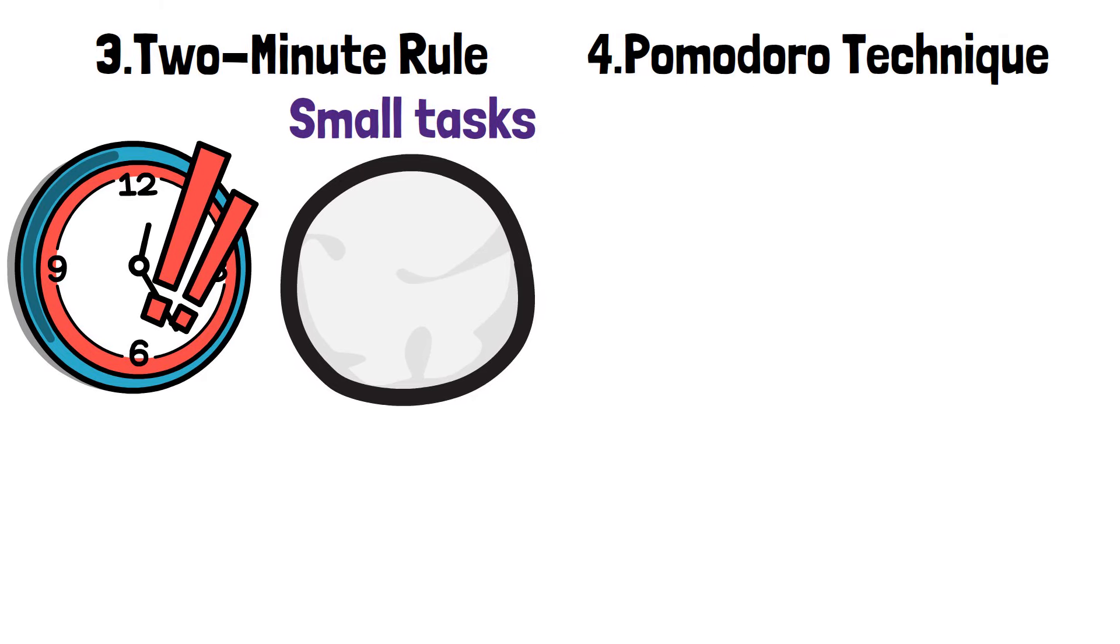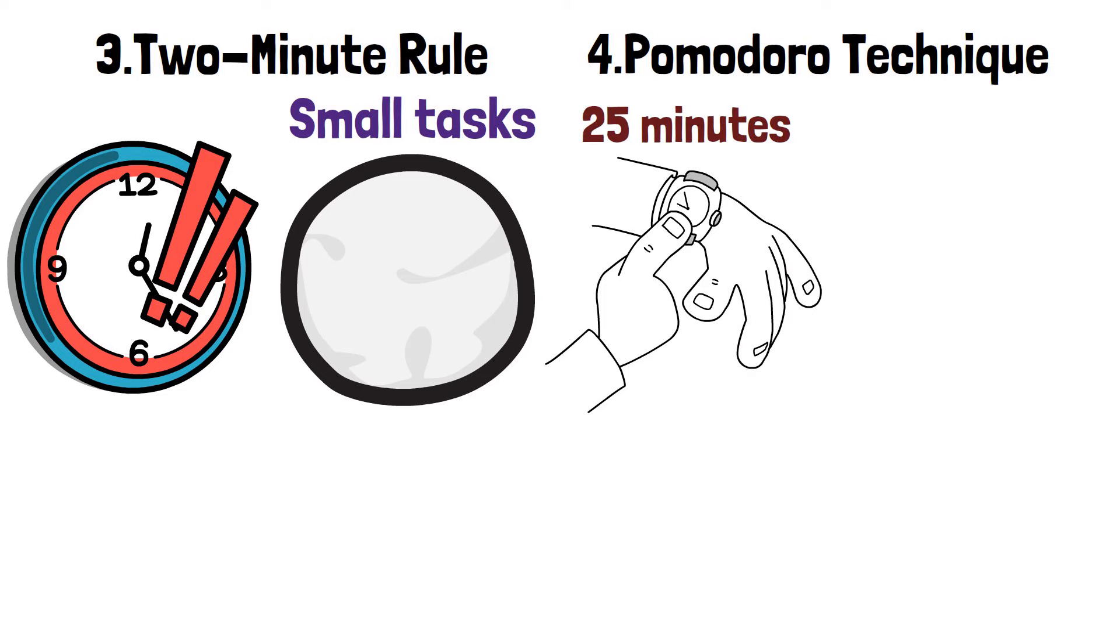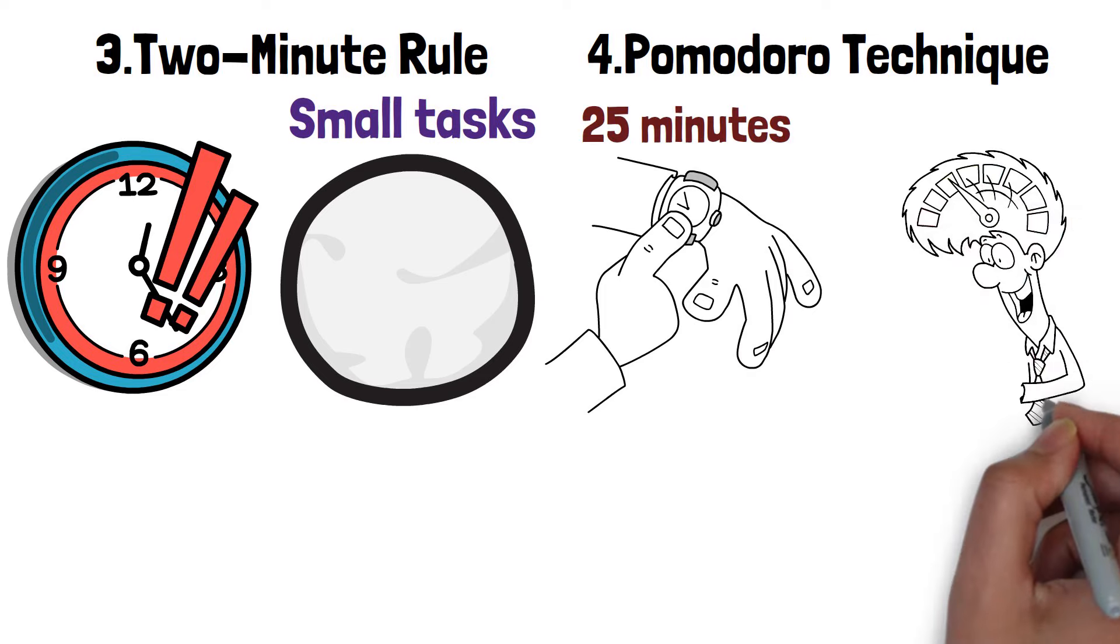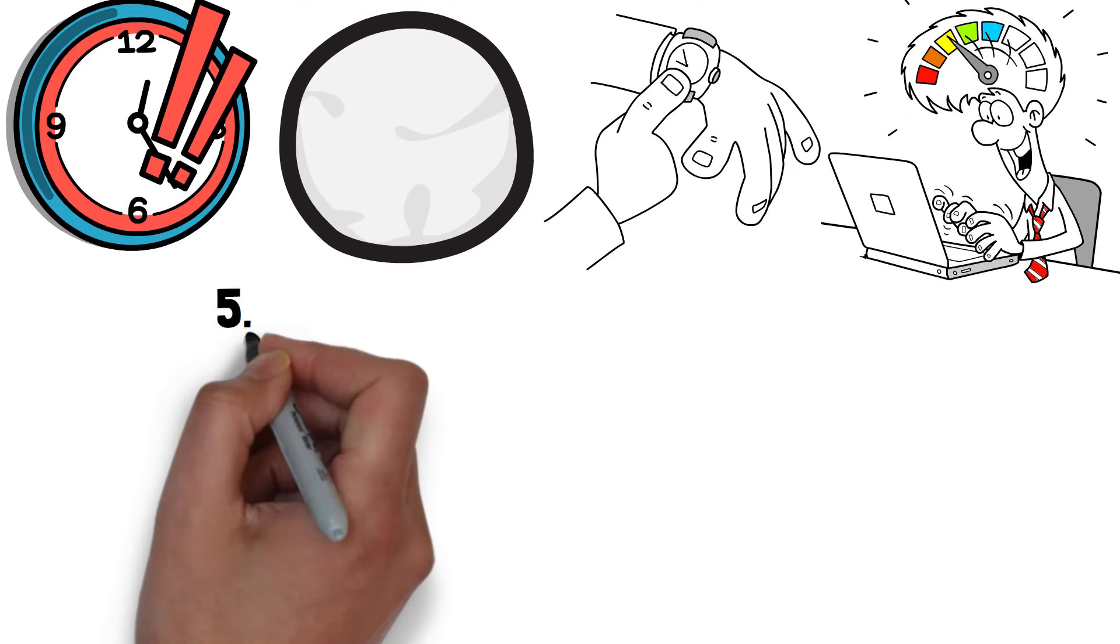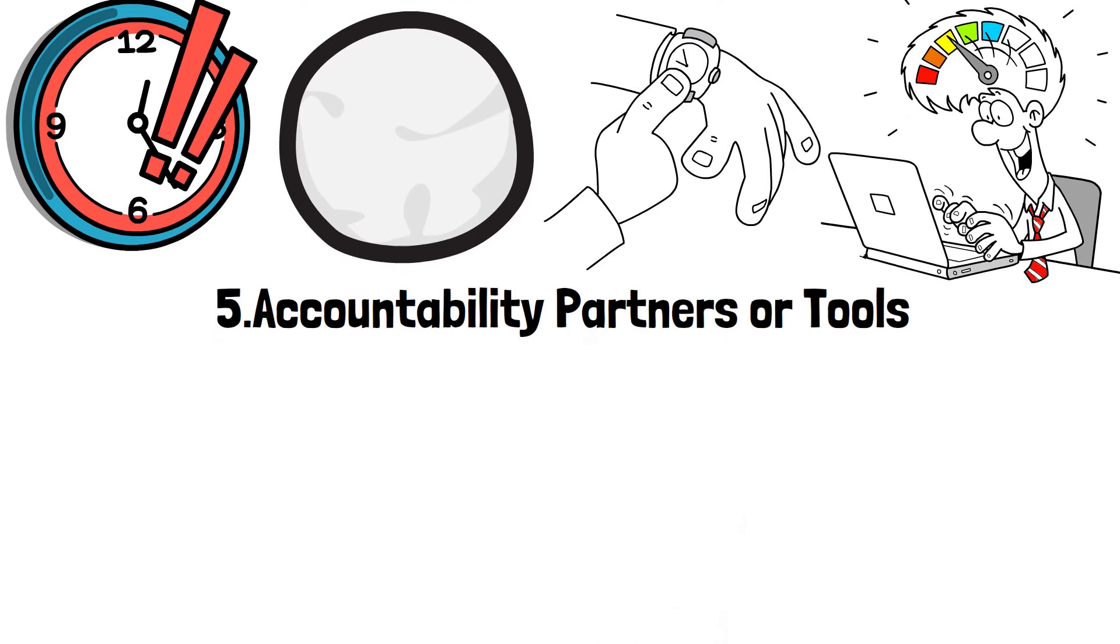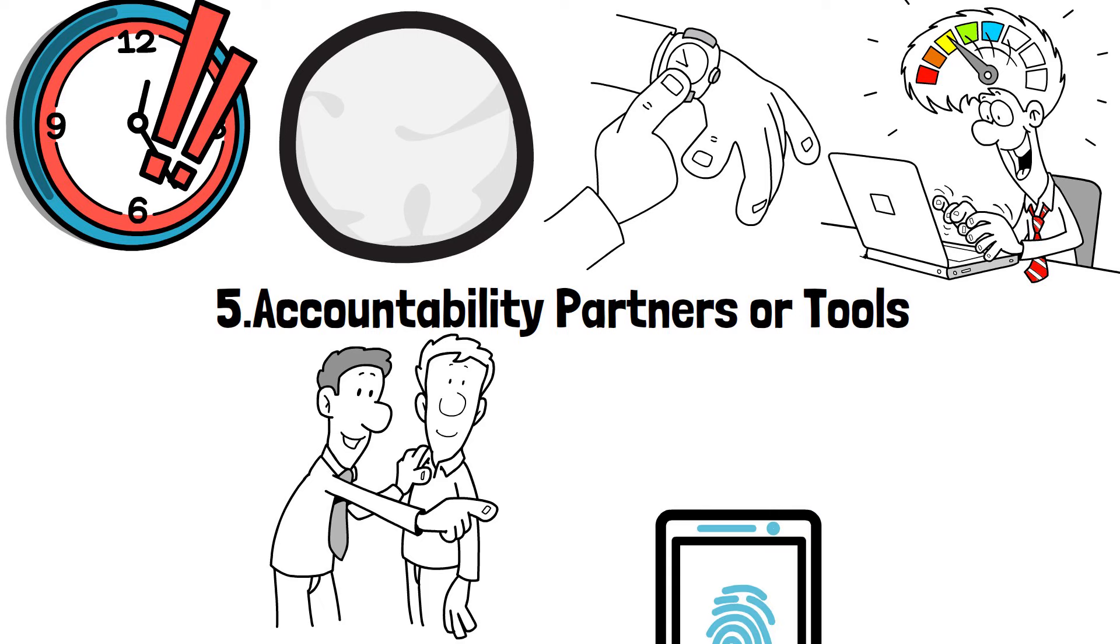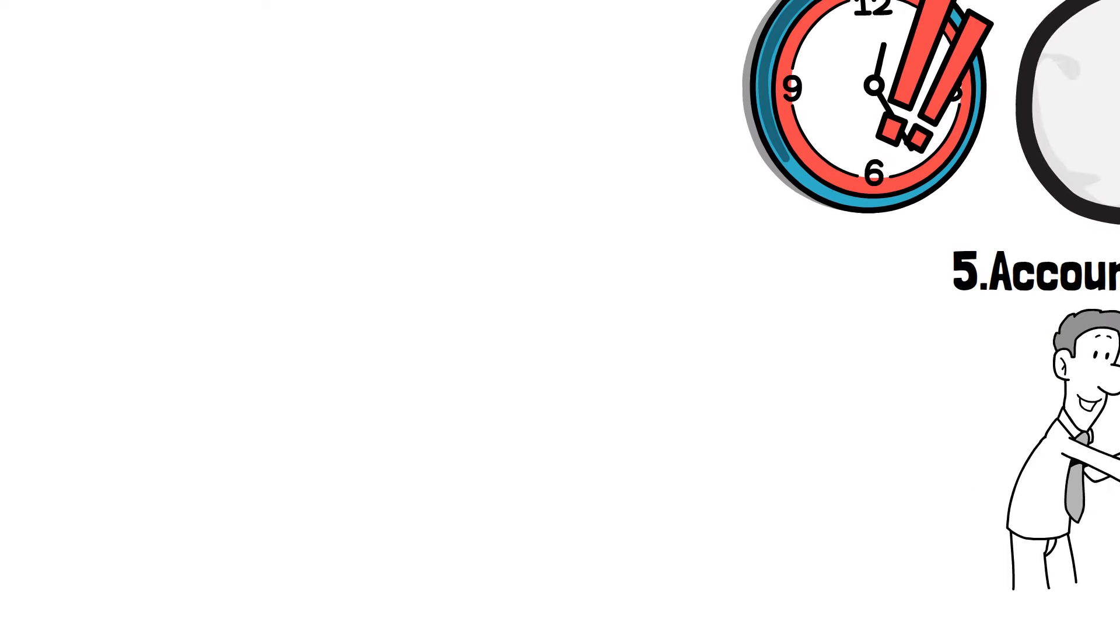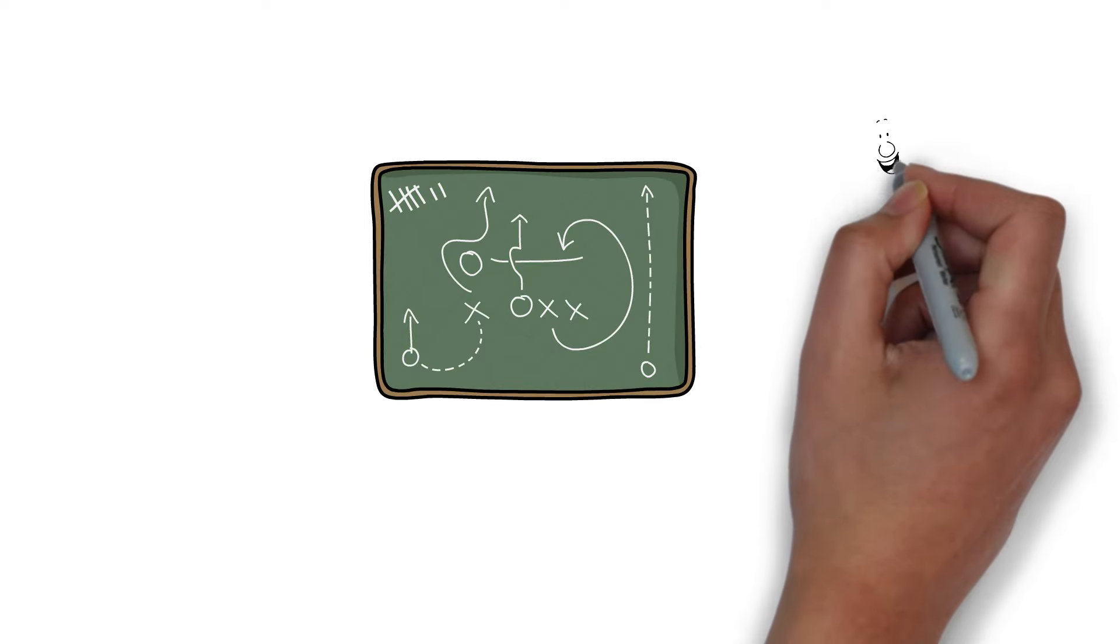Number 5. Accountability partners or tools. Enlist the support of a friend, colleague, or accountability buddy to help keep you on track. Alternatively, use apps or platforms designed to track progress and provide accountability. Experiment with these strategies to find what works best for you.